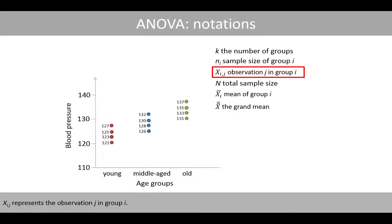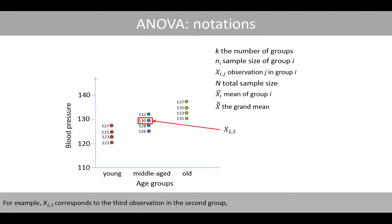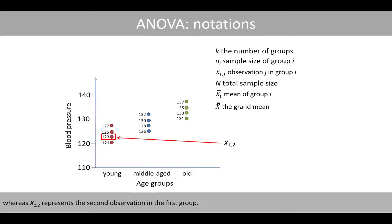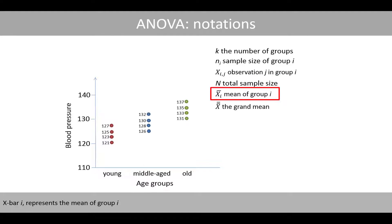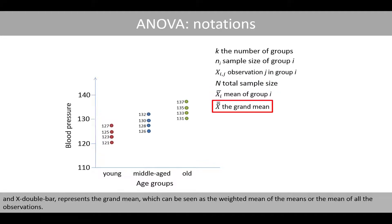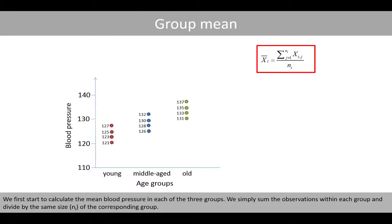Xij represents the observation j in group i. For example, X23 corresponds to the third observation in the second group, whereas X12 represents the second observation in the first group. Capital N represents the total sample size, which is 12 in our example. X-bar-i represents the mean of group i, and X-double-bar represents the grand mean, which can be seen as the weighted mean of the means, or the mean of all the observations.